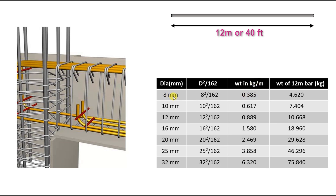If you use an 8 mm diameter bar, the weight in kg per meter is 0.395 — that is the D squared by 162 value. Since we use the 8 mm bar, it is 8 squared divided by 162. The engineer who is doing this bar bending schedule has to keep these values at their fingertips, so that it will be easy to calculate the weight of the bar for whatever length of bar is required.